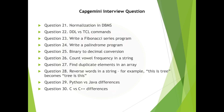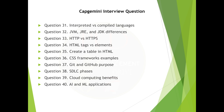Question 29: Python vs. Java differences. Question 30: C vs. C++ differences. Question 31: Interpreted vs. compiled languages. Question 32: JVM, JRE, and JDK differences. Question 33: HTTP vs. HTTPS. Question 34: HTML tags vs. elements.